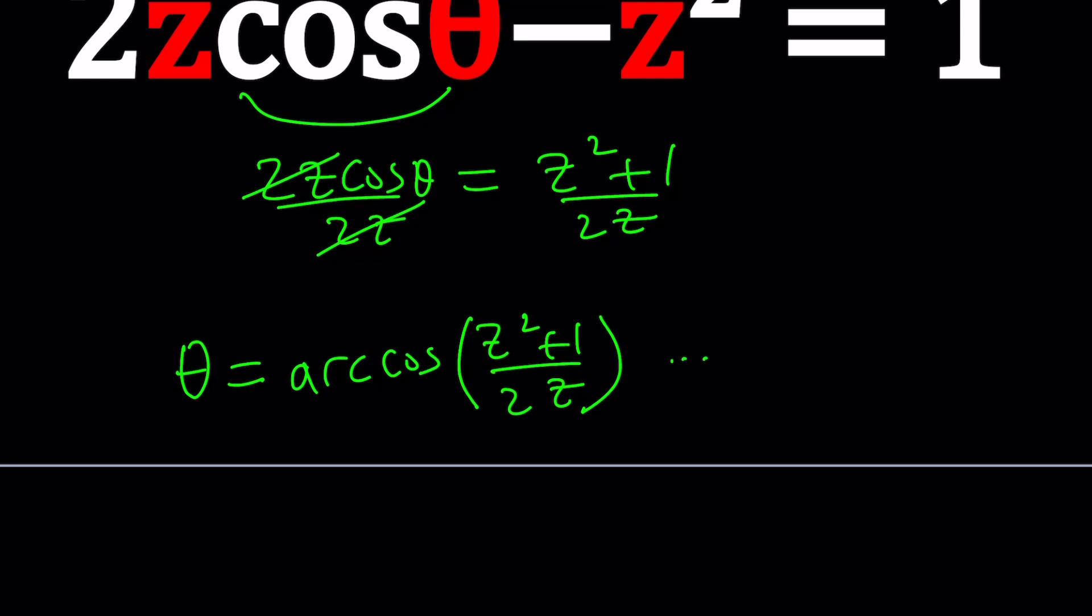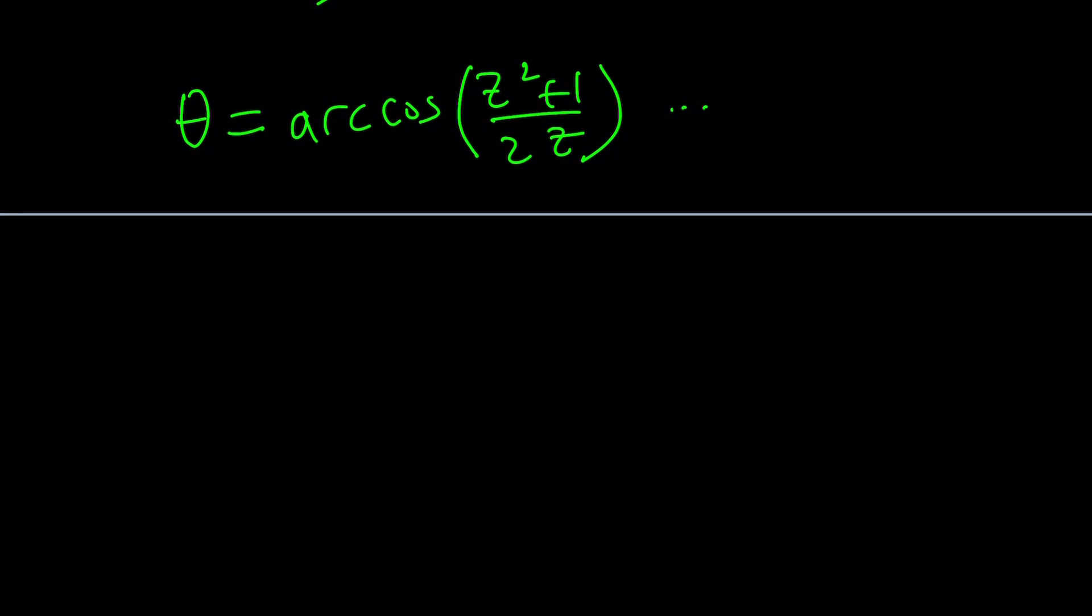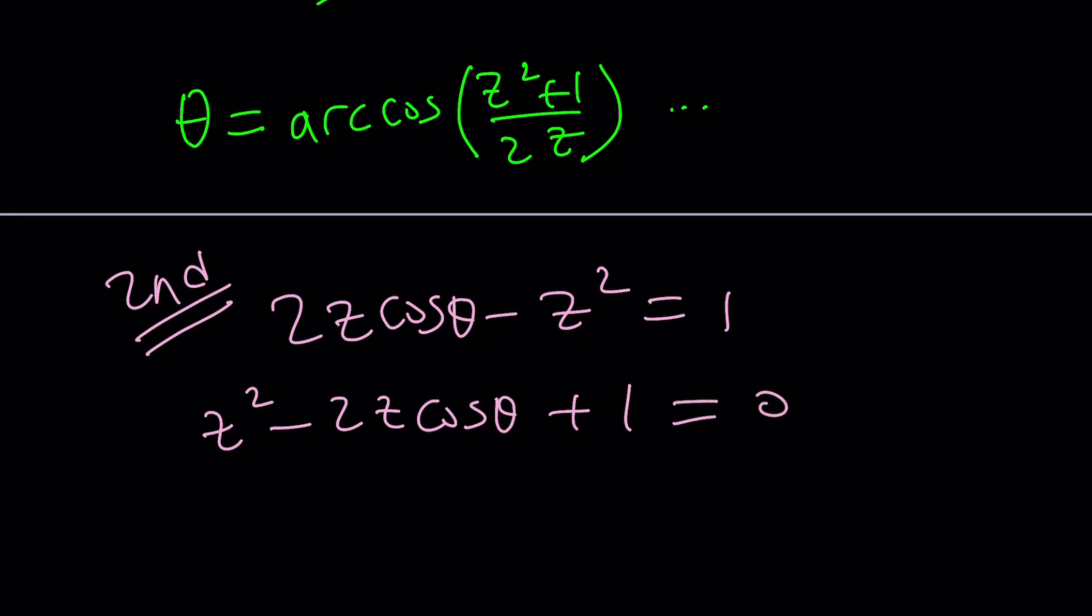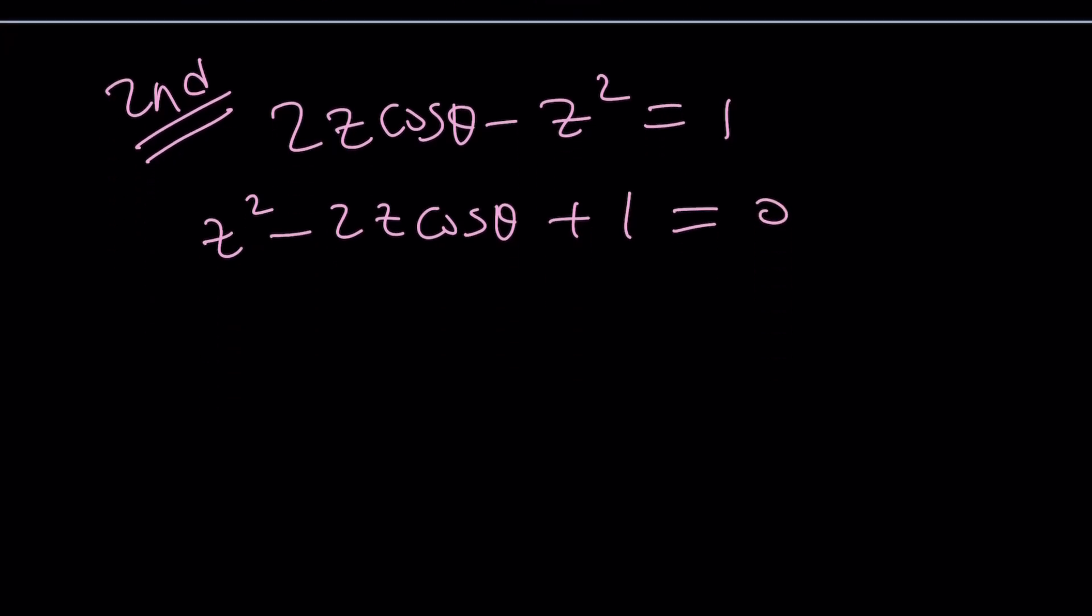But guess what? We're going to start with the second method. We're going to be solving for z, by the way. So let's go ahead and start with the original equation and then put everything on the right-hand side. Because that will give you a quadratic equation. So now we can go ahead and use the good old quadratic formula. Why not?